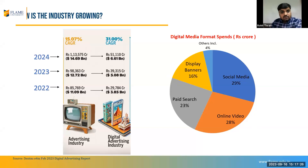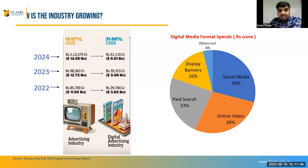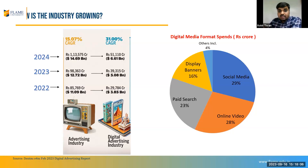If you look at the numbers from 2022, the digital industry is growing at a rate of 31% every year. By 2024, it is estimated to be an almost 51,000 crore industry. If you compare it with traditional advertising, the base numbers are higher for traditional, but the growth rate of digital is going to be even higher. Even during COVID, digital connection became indispensable — enormous changes are happening.